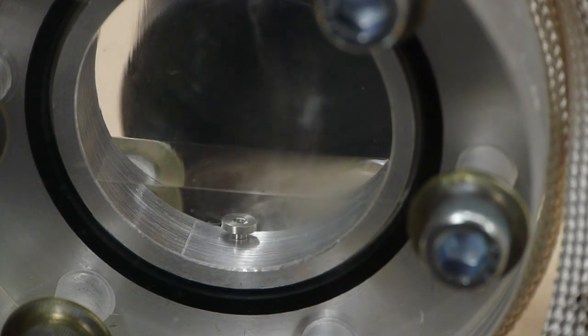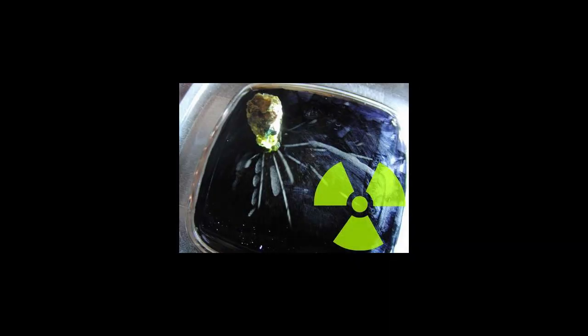So the way a cloud chamber works is that an unstable state is created in the cloud chamber, so that when an alpha particle or a beta particle comes screaming through there, it causes vapor droplets to condense and you can see the trails. It's actually really quite striking.